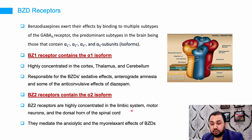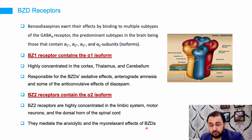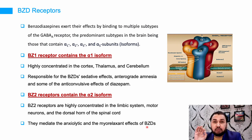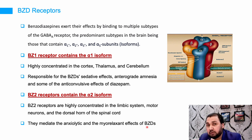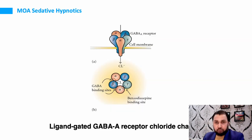The alpha-2 receptors are present only on the limbic system and motor neurons in the dorsal horn of the spinal cord. The anxiolytic effect and muscle-relaxing effect of benzodiazepines are mediated through alpha-2 receptors. So if asked where benzodiazepines work: they work on GABA-A receptors — specifically alpha-1 (mainly anticonvulsive effect) and alpha-2 (anxiolytic plus muscle relaxation).